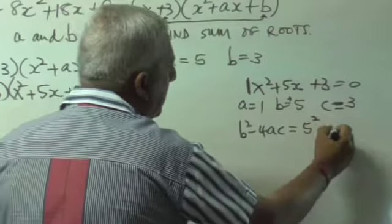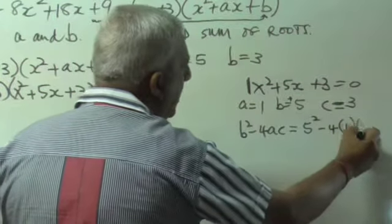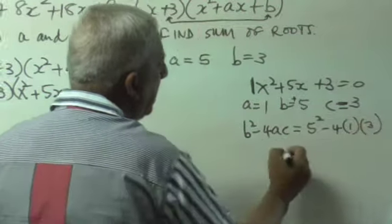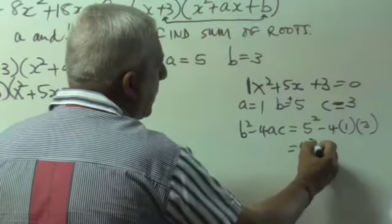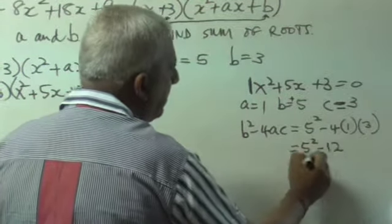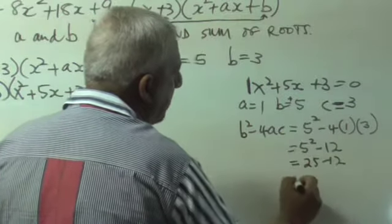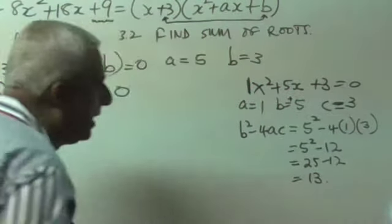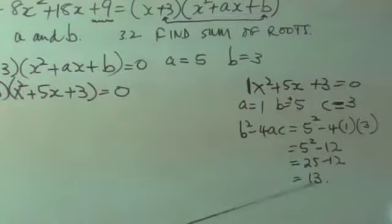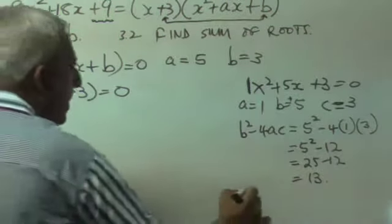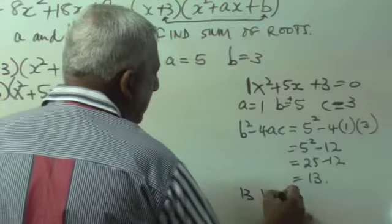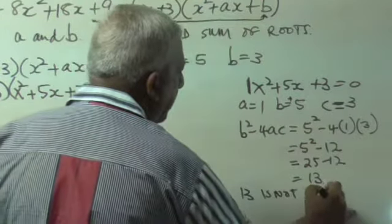That will give you 5 squared minus 4 into 1 into 3. And that will give you 5 squared minus 12. That will give you 25 minus 12, which gives you a final answer of 13. Now, 13 is not a perfect square. 13 is not a perfect square.